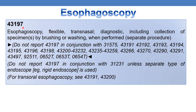CPT 43197 begins the flexible esophagoscopy series. Previously CPTs were rigid and transoral; now 43197 deals with esophagoscopy, flexible, transnasal, diagnostic, including collection of specimen by brushing or washing when performed. Do not report 43197 in conjunction with 31231 unless a separate type of endoscope is used. For transoral esophagoscopy, refer to 43191 and 43200.